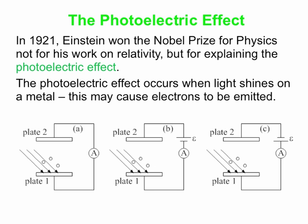Here are three pictures of possible experimental setups — they're slightly different. Picture B has a battery that picture A does not have, and picture C has the same battery but with reversed orientation. You shine light down on plate one; the round objects above the plate represent electrons knocked off by the incident light. Those electrons run across the gap to plate two, then back through the wires and through the ammeter back to plate one, and you measure a current on the ammeter.